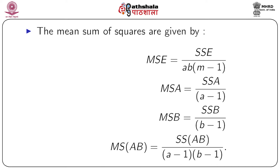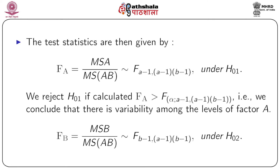The mean squares are given by the sums of squares divided by their corresponding degrees of freedom. Hence, the mean square error MS_E equals SS_Error over a*b*(m minus 1). The mean square for factor A, MS_A, equals SS_A over (a minus 1). The mean square for factor B, MS_B, equals SS_B over (b minus 1). And the mean square for the interaction, MS_AB, equals SS_AB over (a minus 1)(b minus 1). The test statistics are F ratios, just as in one-way analysis of variance.